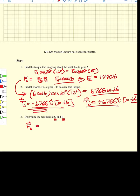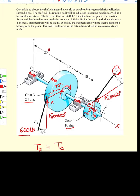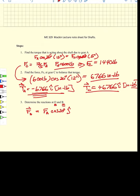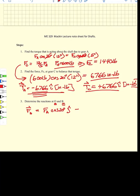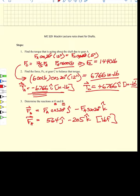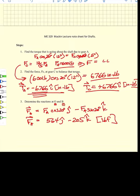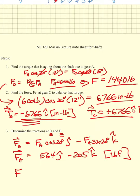The force at A as a vector equals FA times cosine 20 degrees in the j direction, plus a radial force in the negative z direction: FA times sine 20 degrees. This gives 564 pound-force j minus 205 pound-force k. Likewise, the force at C as a vector is minus 492 j plus 1353 k, in units of pound-force.